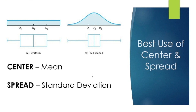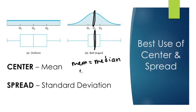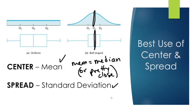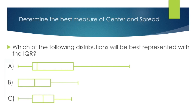The opposite is true if the data is symmetrical. If the distribution is bell-shaped and the box plot looks the same on the left and the right, the mean and the median are equal or very close. As long as they are pretty close or exactly the same, we always want to use the mean for center and standard deviation for spread. That applies to symmetrical distributions.